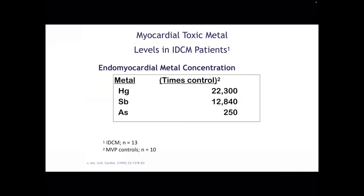As people that do anti-aging medicine, it's clear that even at 60 micrograms per deciliter of lead — that's not a lot — you start to lose longevity. If you've never looked and never checked, you'll never know whether you have it or not. Everyone listening tonight, if you have not or are not undergoing some methodology to remove it, has these toxic metals in their system. Looking at the American Journal of Cardiology from 1999, in idiopathic dilated cardiomyopathy, they found in endomyocardial tissue 22,300 times the amount of mercury. Arsenic was 250 times, antimony 12,840 times. So these metals do get into the heart and cause problems.